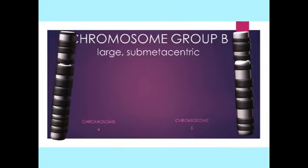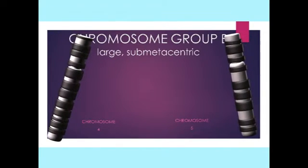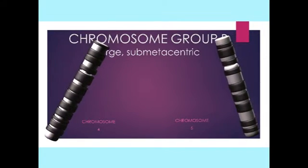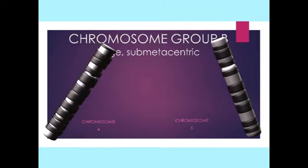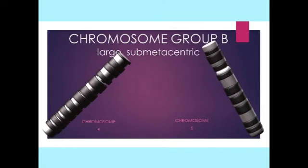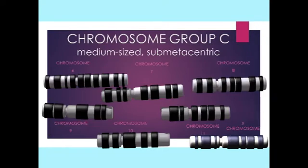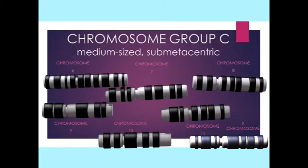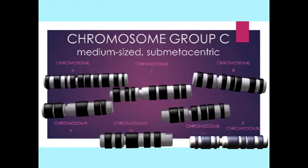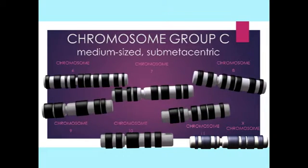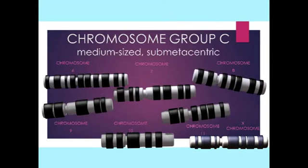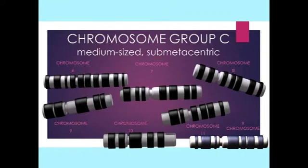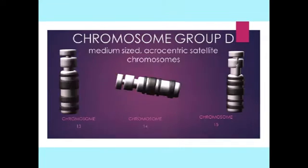Group B chromosomes include chromosomes 4 and 5, which are large, submetacentric chromosomes. Group C chromosomes include chromosomes 6 through 12 and the X chromosome, which are medium-sized and submetacentric.